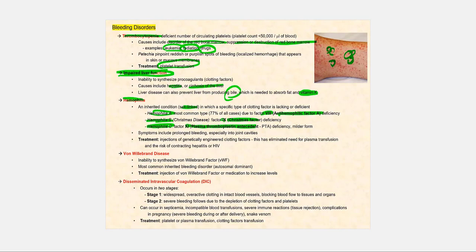The symptom includes prolonged bleeding because they cannot form a blood clot without these clotting factors, and the blood begins to accumulate in the joint cavities. The treatment will involve injections of genetically engineered clotting factors. Before this came about, the individual had to receive plasma transfusion, increasing the risk of contracting hepatitis or HIV.